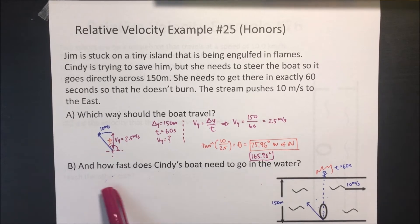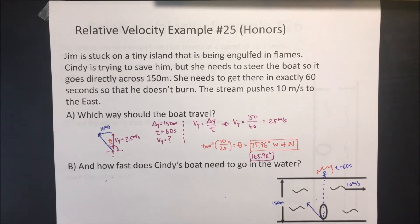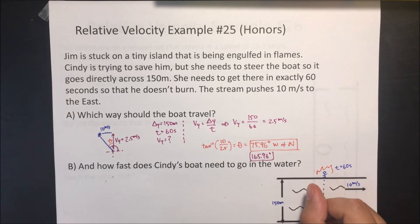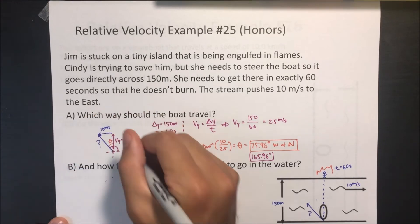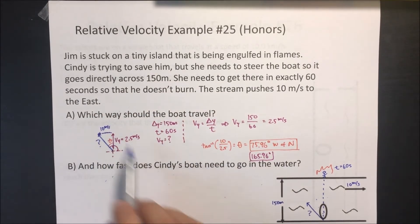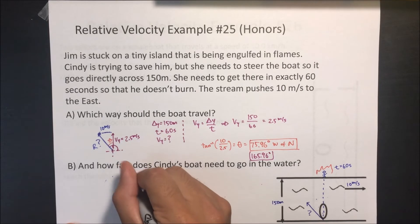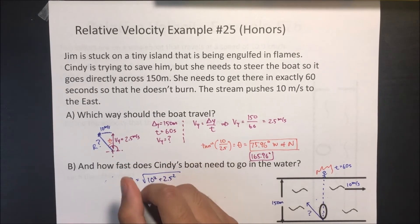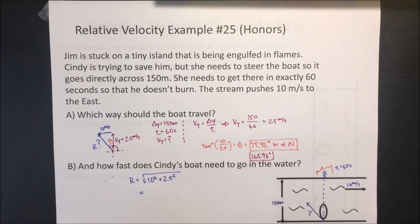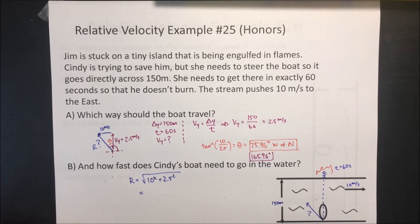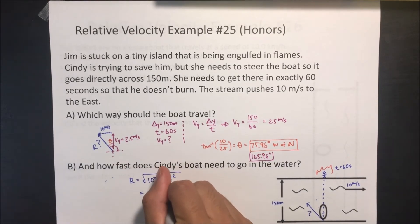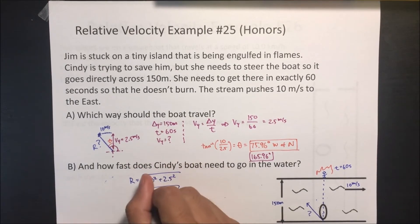How fast does Cindy's boat need to travel through the water? Now that we have both components — 10 m/s west and 2.5 m/s north — we use the Pythagorean theorem on the resultant vector: speed = √(10² + 2.5²) = 10.3 meters per second.